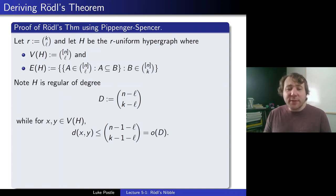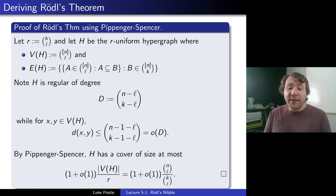And what about the co-degrees? Well, for x and y in V(H), d(x,y) will be at most (n-1-ℓ) choose (k-1-ℓ). Since x and y are distinct, we'll have put down at least ℓ+1 of the vertices. So we only can choose k-1-ℓ of those out of the remaining n-1-ℓ. And the point is, that's at least a factor of n lower in the polynomial there. And so that's going to be little-o of d. Because again, we're thinking n is very large compared to these numbers. And so then that is indeed little-o of d, smaller than any γd.